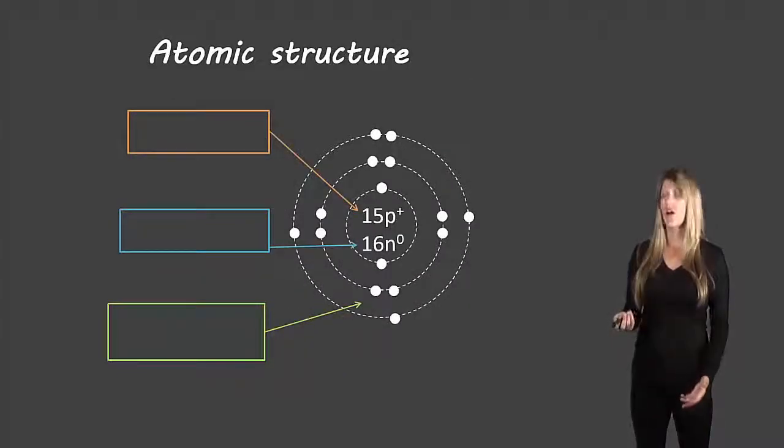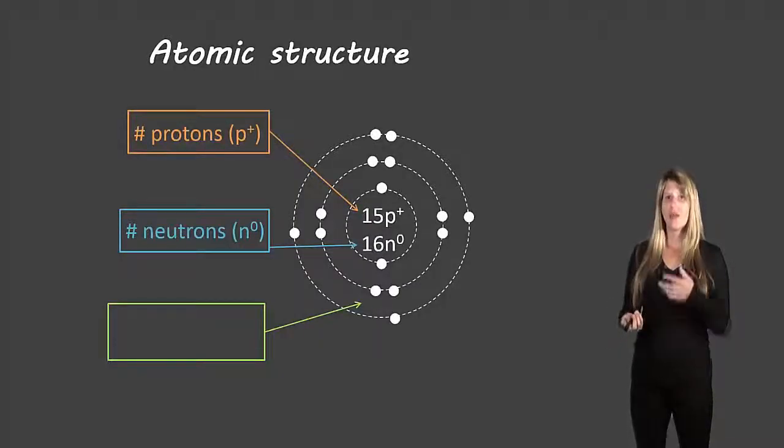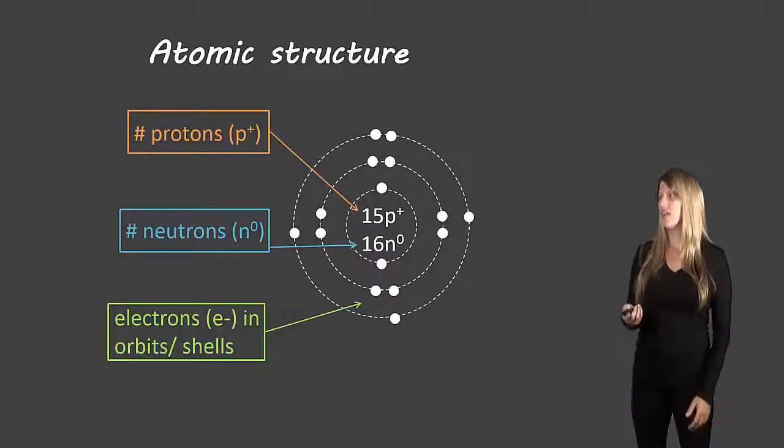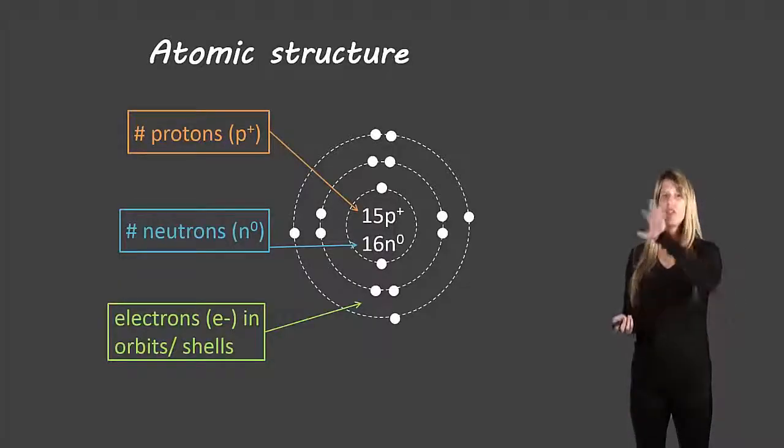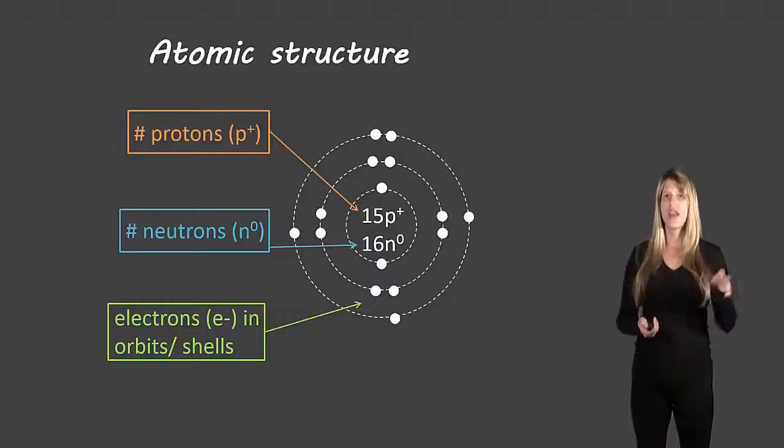So let's look at our atomic structure. We said inside the nucleus we have our protons and we have our neutrons and when we draw diagrams we'll actually write the number of protons and the number of neutrons there. Outside we have the electron shells and this is where we put all of our electrons. When we get to the video on drawing diagrams of atoms, you'll actually find out how many electrons and where we put them.